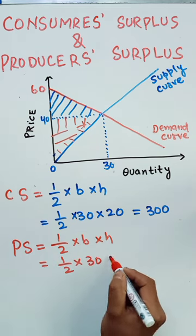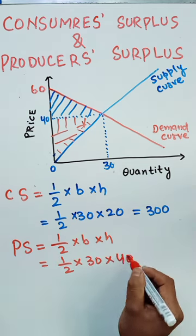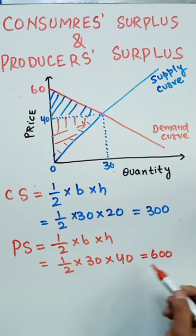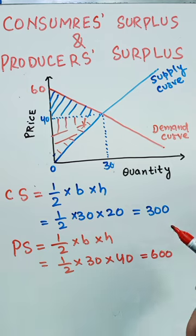What is base? Again, base is 30. And what is the height? Height is from 0 to 40, which is 40, which comes out to be 4 into 3. This is 1200 upon 2, which comes out to be 600. Okay, so our producer surplus is 600 and our consumer surplus is 300.